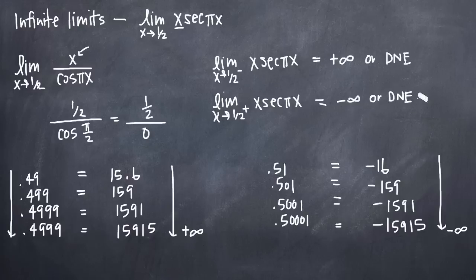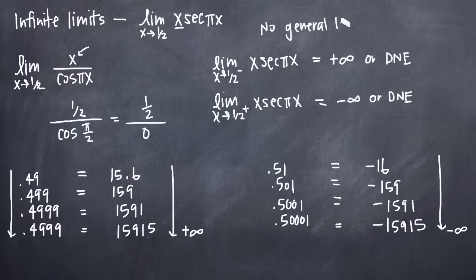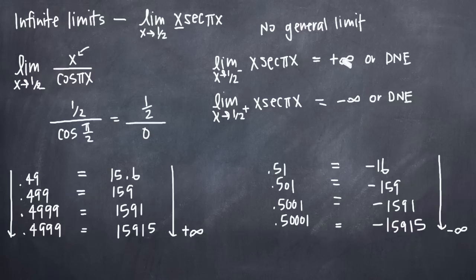The third piece of information we gather is that because the left and right-hand limits are different, there is no general limit. Remember that the definition of a limit requires that the right and left-hand limits both exist and are equal to one another. In this case, whether you say they don't exist or identify them as positive and negative infinity, they are not equal to one another — which means there is no single general limit as x approaches one-half.